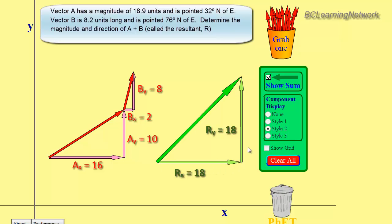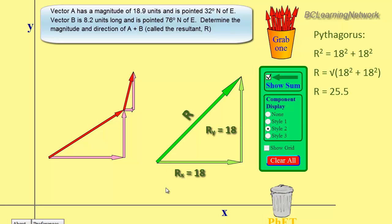Now obviously, if we know the x and we know the y, the only thing left is a little bit of Pythagoras to get our overall resultant. Let's label our resultant R. R squared will be equal to 18 squared plus 18 squared. Therefore, R is the square root of 18 squared plus 18 squared. And we get a value of R of roughly 25.5.